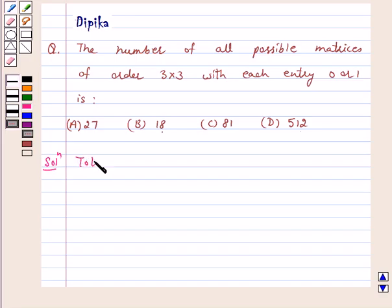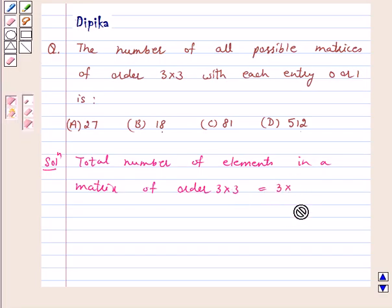The total number of elements in a matrix of order 3 by 3 is equal to 3 times 3, which equals 9.